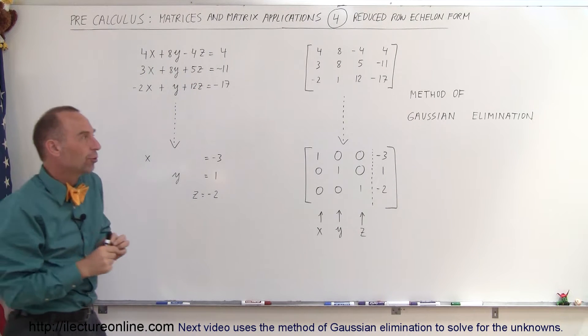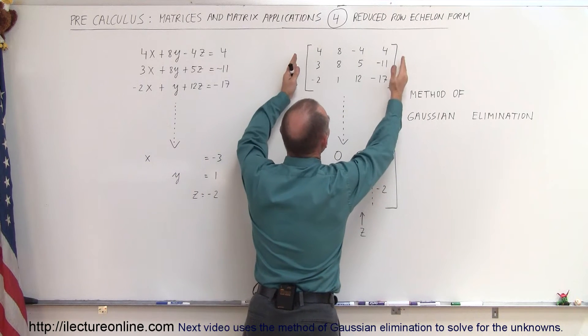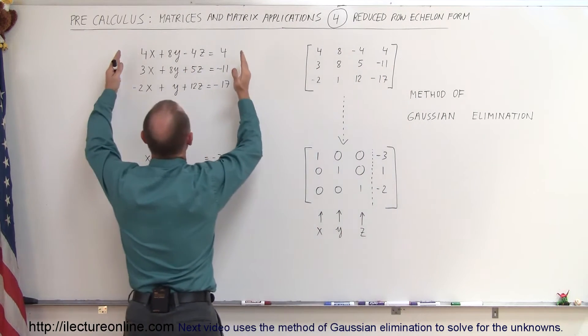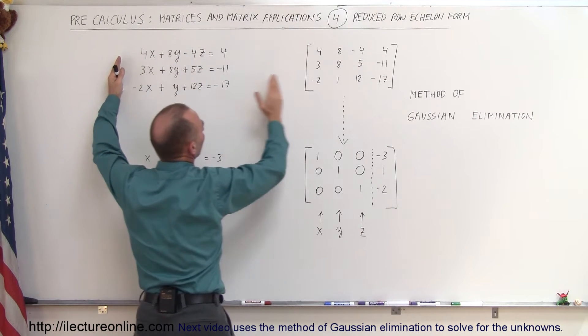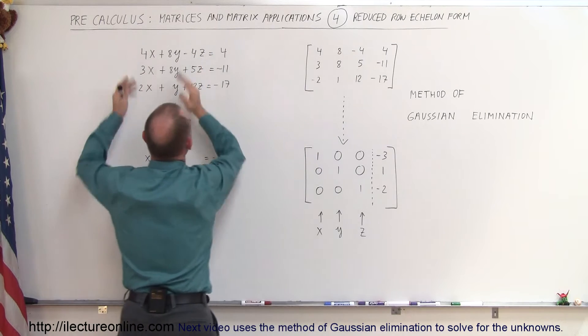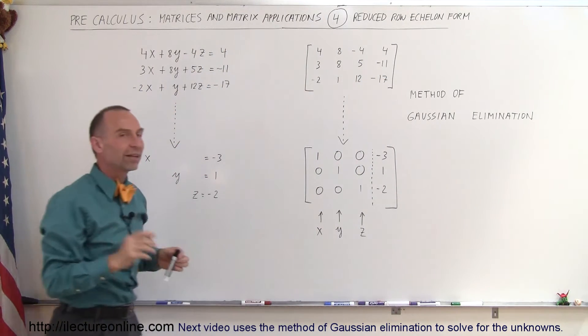But if we go a step further, if we take the method of Gaussian elimination and we take the augmented matrix which is of course a representation of the three equations. The numbers here are the coefficients of the X, Y, and Z variables and then the last of the numbers here simply the constants on the right side equal sign.